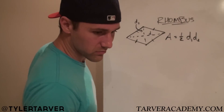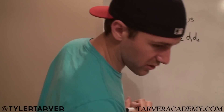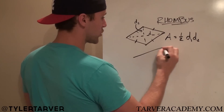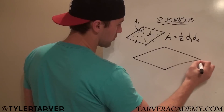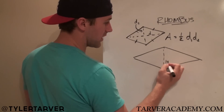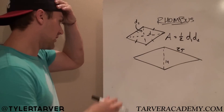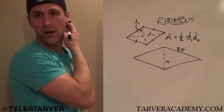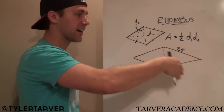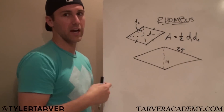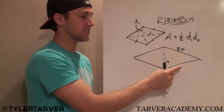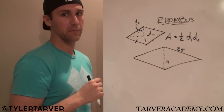Let's do a problem — I'm gonna do one that's a little more difficult so I can hopefully help you. If you can understand this, you can understand an easier one. Let's say that diagonal is 14 and this side length is 25. Obviously if they just gave you two diagonals, you could just do 0.5 times one diagonal times the other. But in this one, we don't have one of the diagonals — all we've got is a side length of 25 and one diagonal of 14.